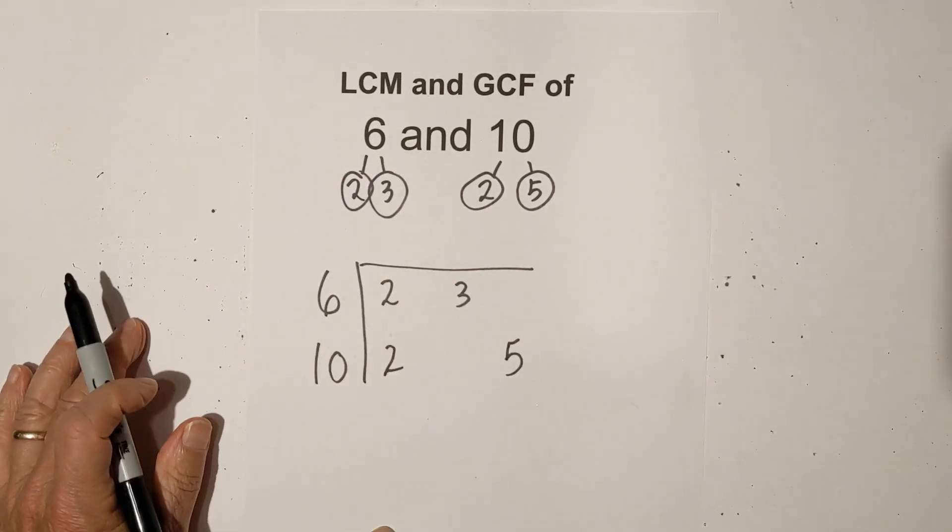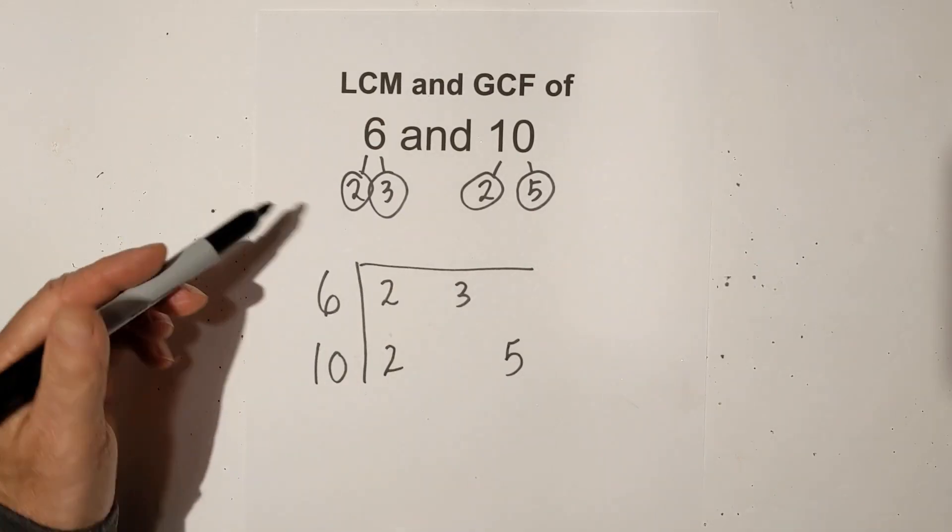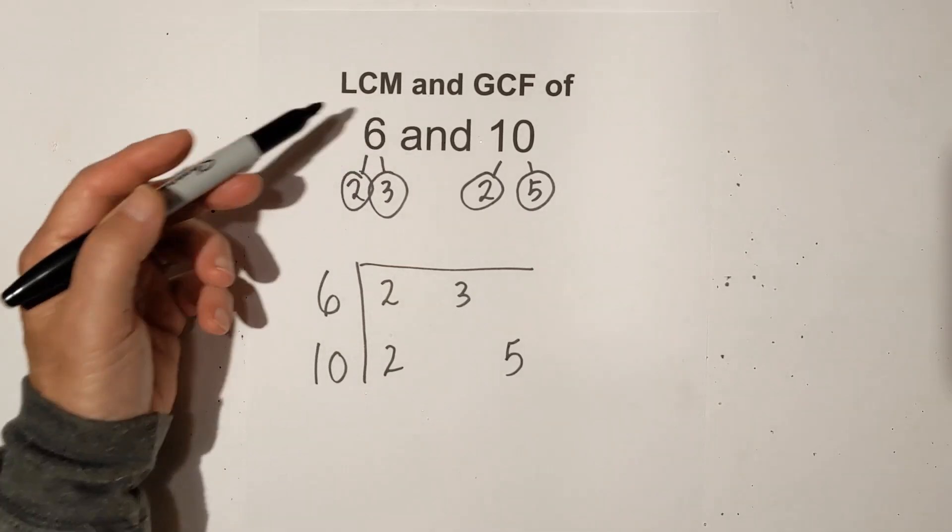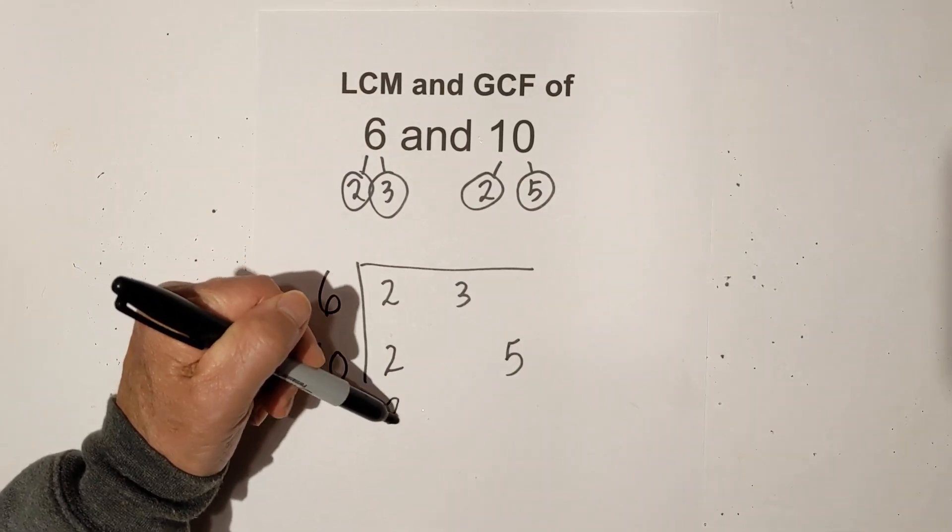So now that I have the chart set up for the LCM what I do is I basically multiply these numbers together. However if I have 2 numbers since I only have a 6 and a 10 I will bring only one number down in the column.